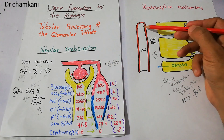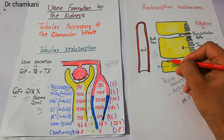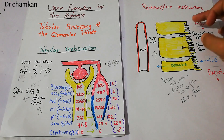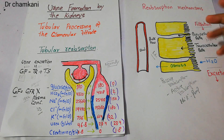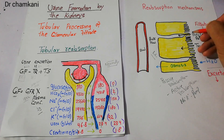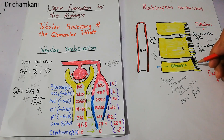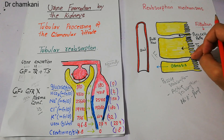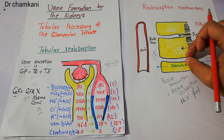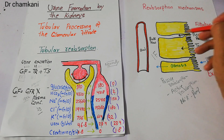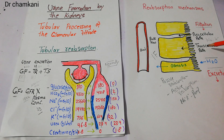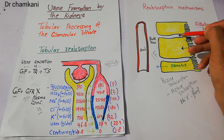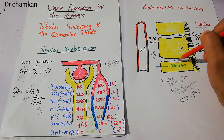Before moving into the peritubular capillaries, substances may enter into the spaces between the different tubule cells. These cells are connected with tight junctions, but there is intercellular space as well. Substances may move directly through the paracellular path into this intercellular space, or they may move through the transcellular path — either through the cell membrane or through the tight junctions — ultimately into the intercellular spaces.